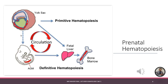Up to the third week of gestation, blood cell generation begins in the wall of the yolk sac during intrauterine life. Primitive erythroblasts are derived from mesenchymal cells. Gradually, with the passage of time, hematopoietic stem cells start migrating toward the liver — this is referred to as definitive hematopoiesis.